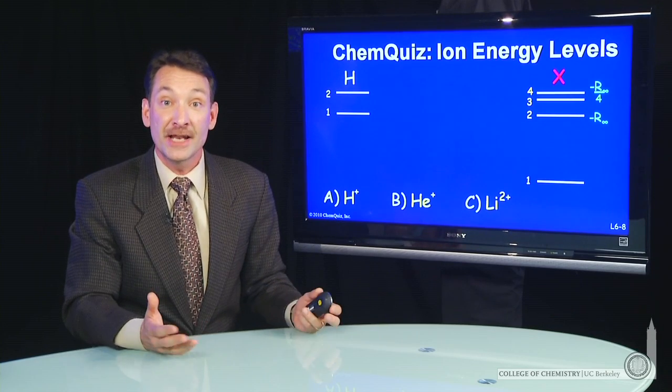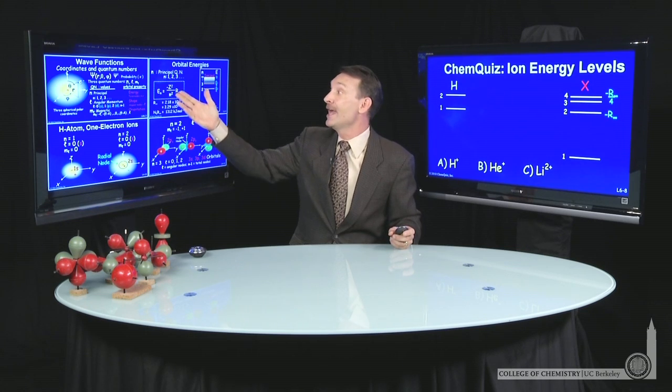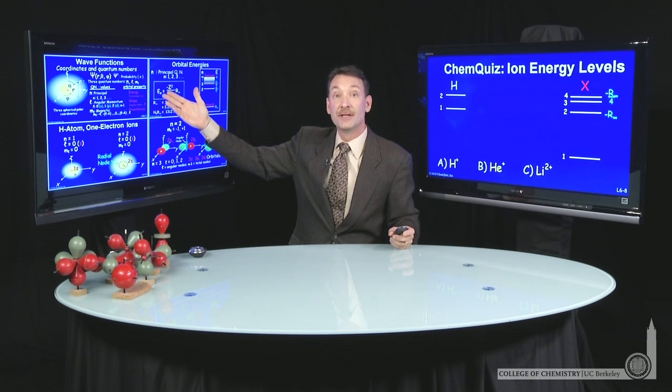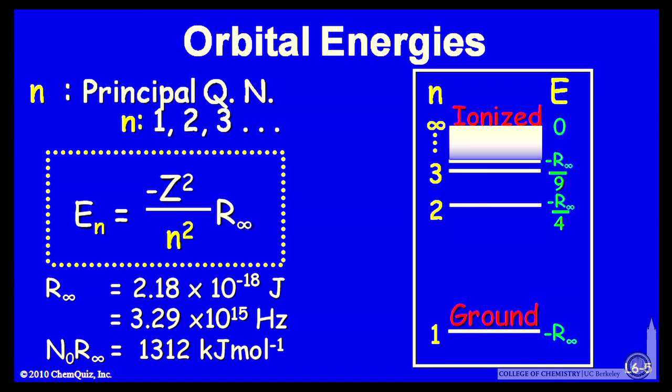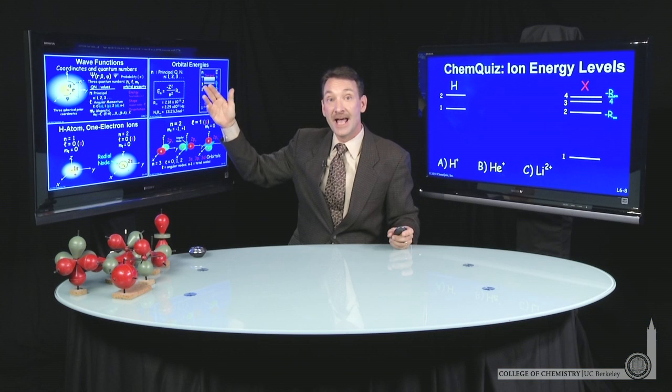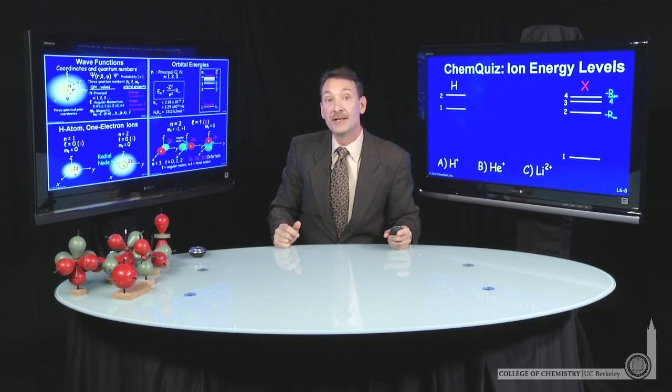When we look at energy levels in a quantized system like a hydrogen atom, the energies are given by n, the principal quantum number. The energies go as -Z²/n² times R∞. As n increases, the energy level gets closer and closer to zero.